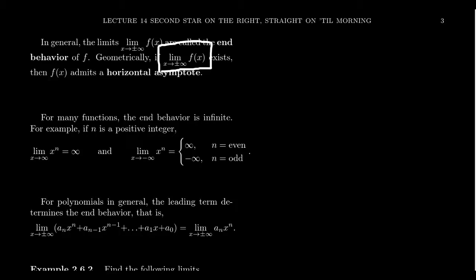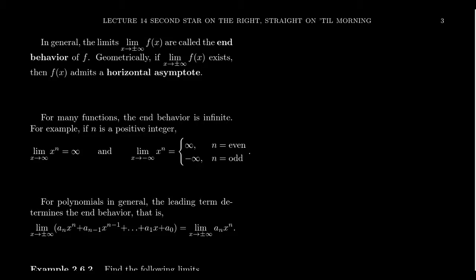Oftentimes as X goes to infinity, Y is going to go with it. As X approaches positive or negative infinity, Y might also approach positive or negative infinity — that's very common behavior for many functions. But there will be some times where this limit turns out to be a finite number, in which case we refer to that as a horizontal asymptote. So as we ask what happens as X goes to the far left or far right of the graph, this is often described as the end behavior of the graph.